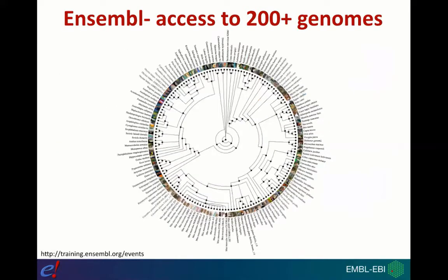We have over 200 different species in Ensembl, and the project is dedicated to vertebrate species. We try to cover the broadest taxonomic space possible for vertebrates — obviously human and the other great apes, then a large number of other primates and placental mammals including agriculturally and conservationally important species. We also have marsupials and monotremes for those interested in mammalian evolution, as well as a large number of birds, fish, reptiles and amphibians.